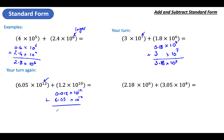Add those two together to get 6.062, because the 5 is in the same column as the 1. Times ten to the power of 12. Remember, you don't adjust those powers of ten — once you've done your adjustment, that's it, you don't need to.